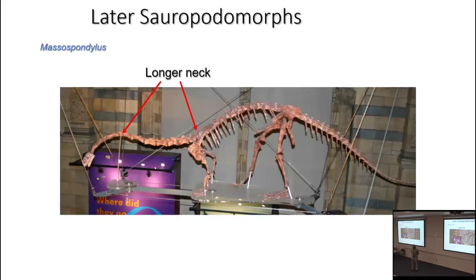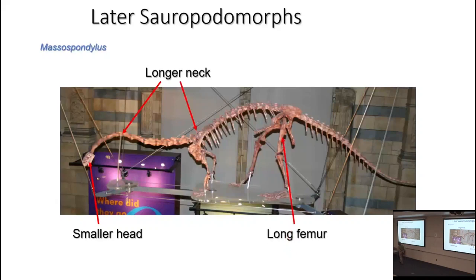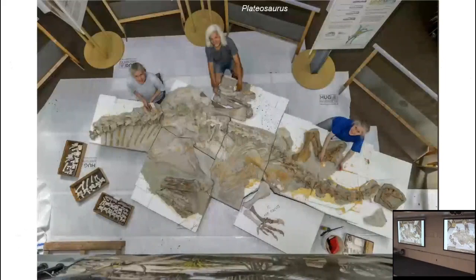In later sauropodomorphs the neck becomes proportionally even longer, and from this point on sauropodomorphs are characterized by having the longest necks of any dinosaur of their size, and proportionally much smaller heads. The adult Massospondylus skull is much bigger than the animal's basal relatives. Also, sauropodomorphs from this point on have very long femora — indicating they're definitely not doing fast running; a long femur, much longer than the lower leg bones, means those limbs are mostly weight-bearing.